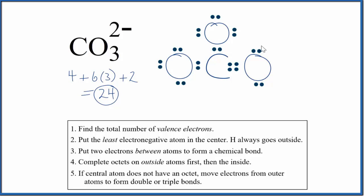The oxygen still has 8, but now the carbon has 8, as do both of these oxygens. And we're using only 24 valence electrons. So this is a good Lewis structure for CO3 2-.